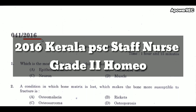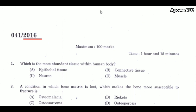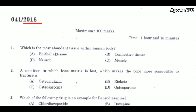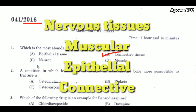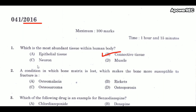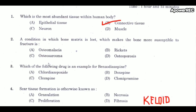Welcome. This is a 2016 homeopathy nursing questions review. First question: which is the most abundant tissue within the human body? The correct answer is connective tissue. The human body consists of mainly four types of tissues: nervous tissue, muscular tissue, epithelial tissue, and connective tissue. Connective tissue is the most abundant tissue in the human body.